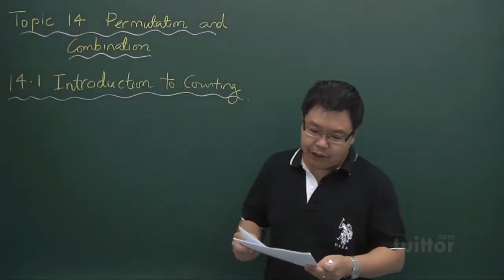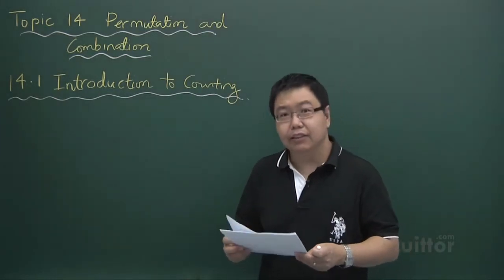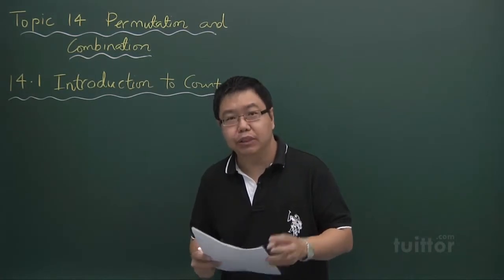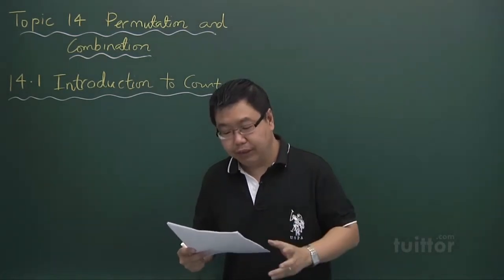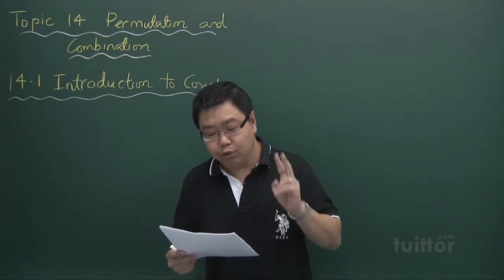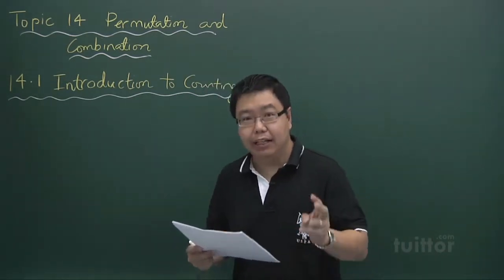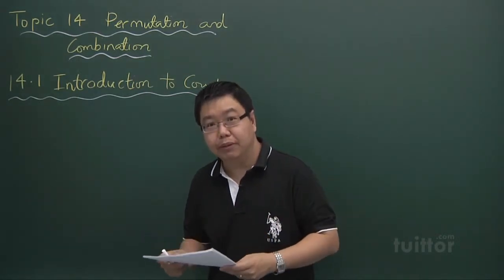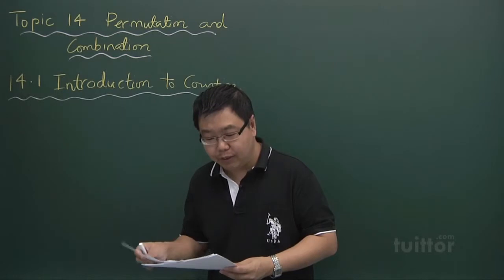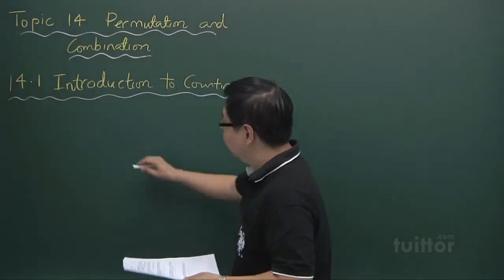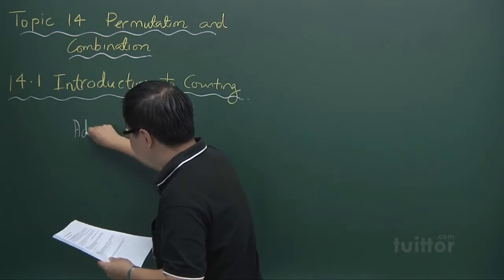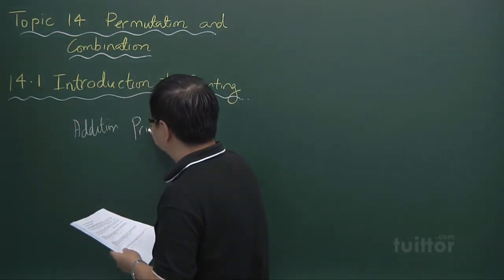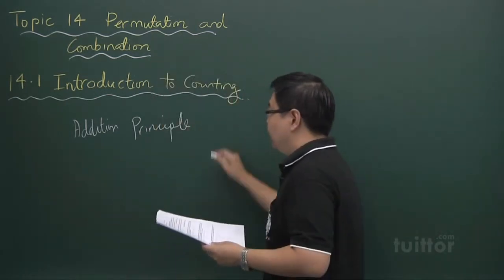Hi everyone, this chapter — Chapter 14 — is on permutation and combination. In this first video, I'll be going through the concept of counting, specifically two principal counting methods: the addition principal and the multiplication principal, along with three examples pertaining to these counting approaches. The first one is called the addition principal of counting.